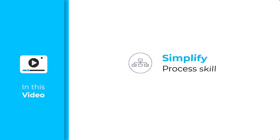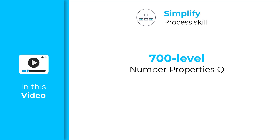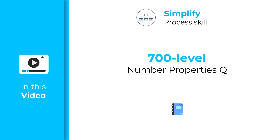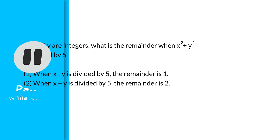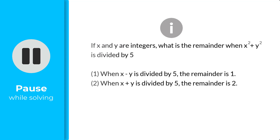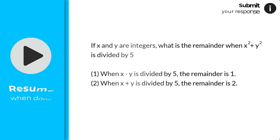Apply the simplify process skill to solve this 700-level number properties question from the official GMAT test. Pause the video while you're solving and resume when you're done.